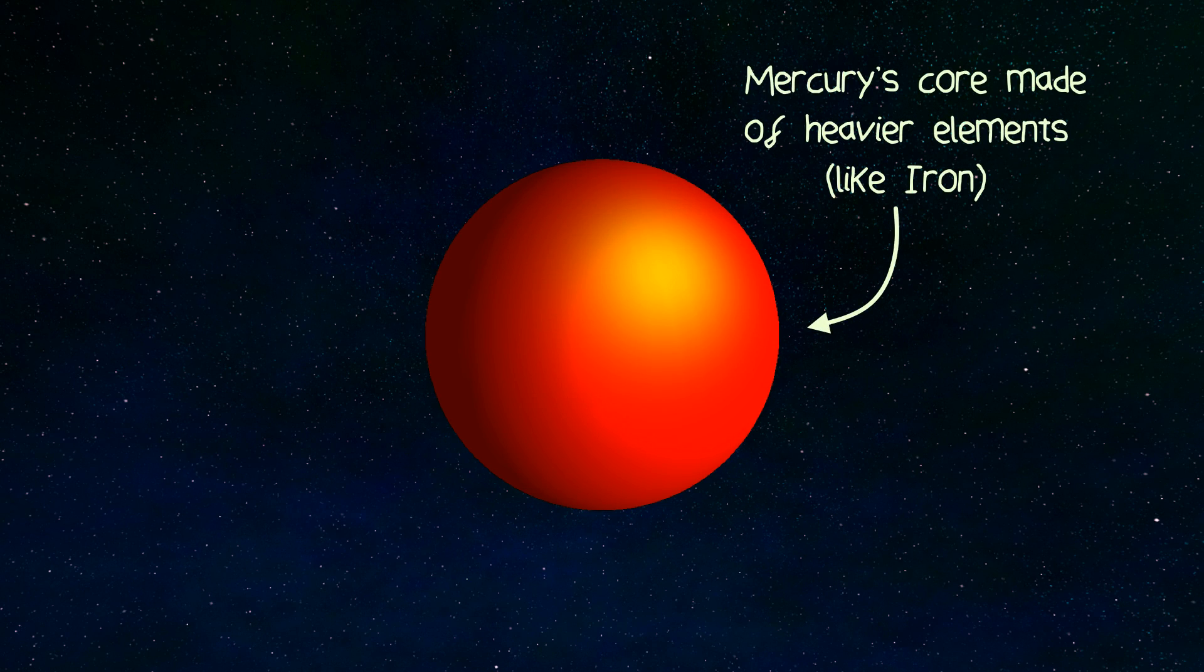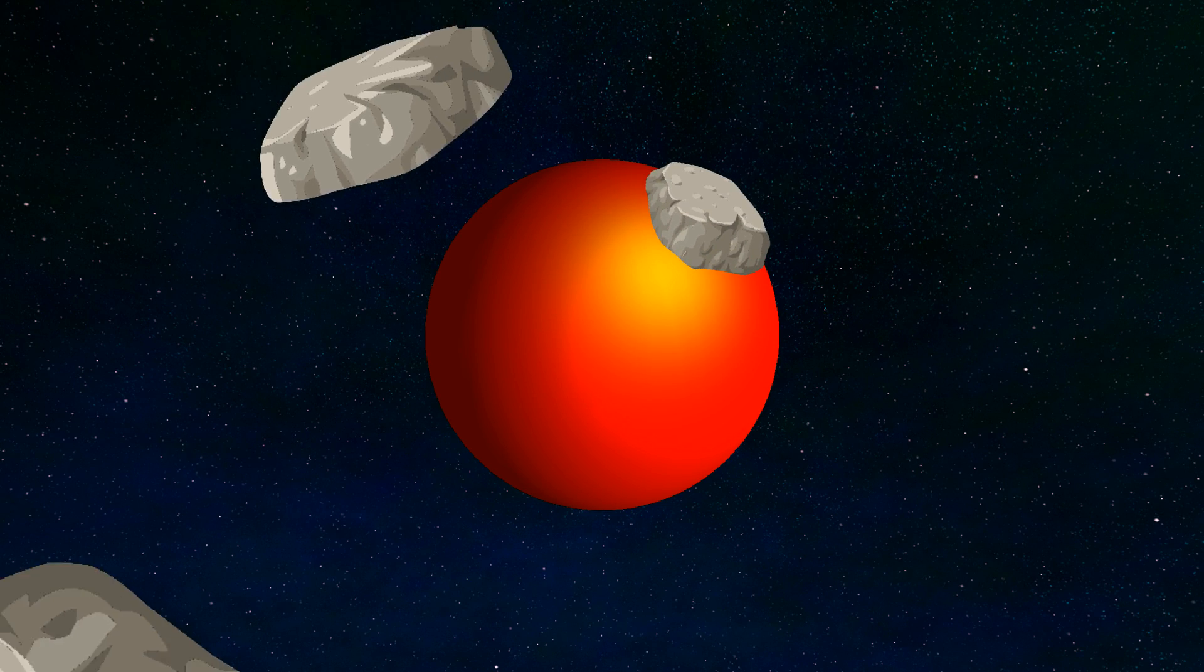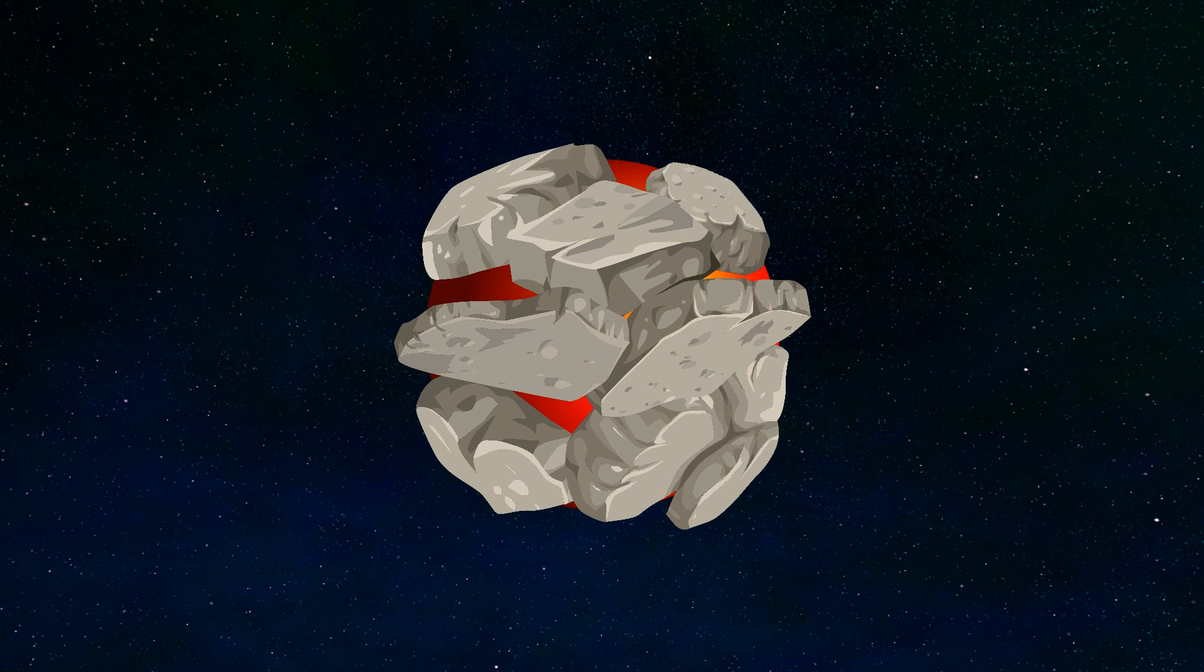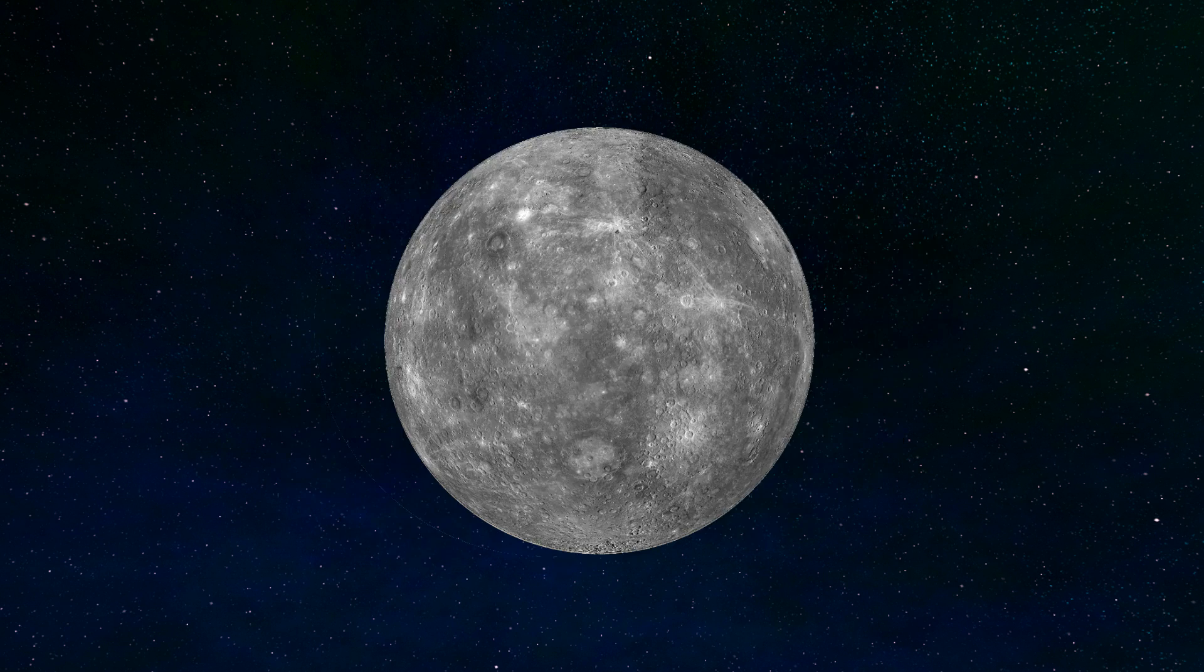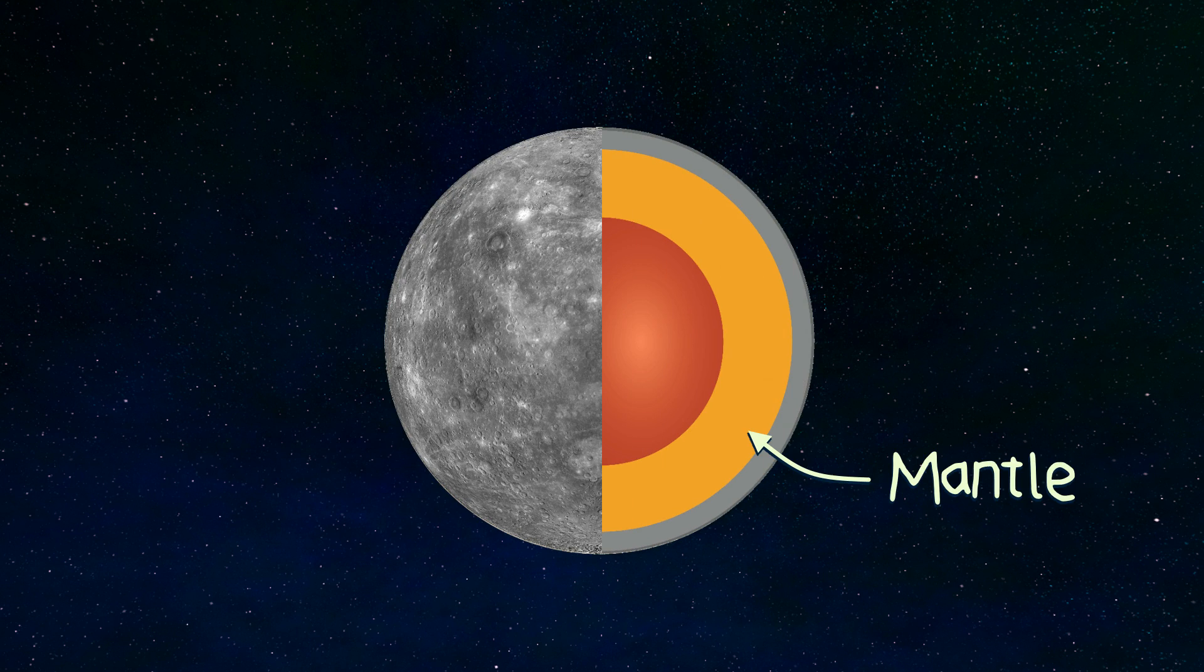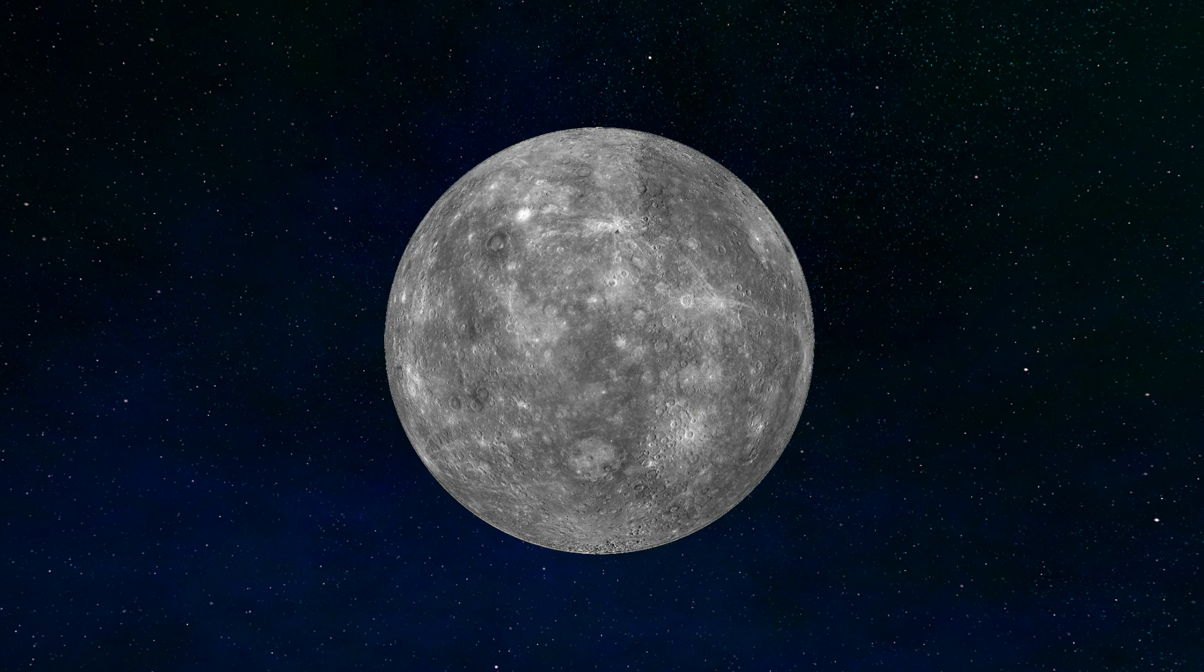Once the heavier elements coalesced to form Mercury's core, all the silicates, aka the rocky materials, were gravitationally attracted to this heavy mass. Over time, these silicates formed Mercury's mantle and surface. Since all the materials went into making Mercury, there was nothing left to make a moon from.